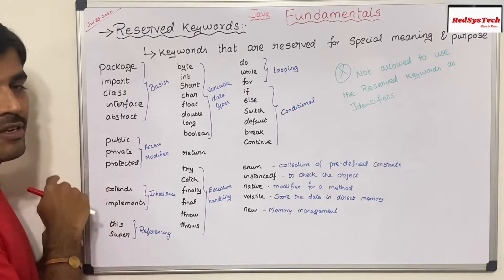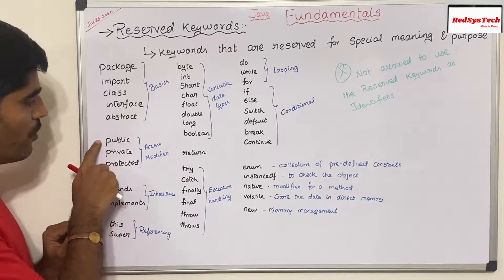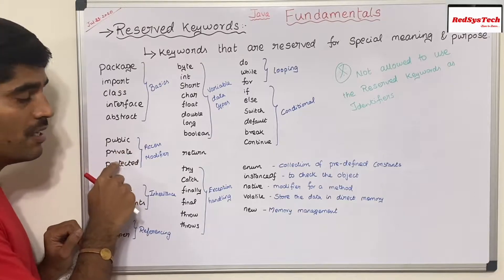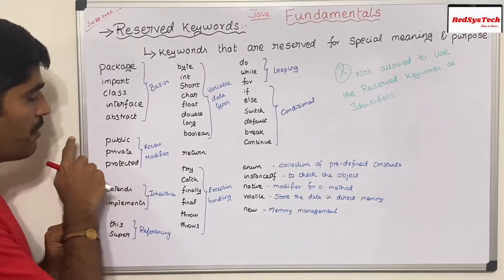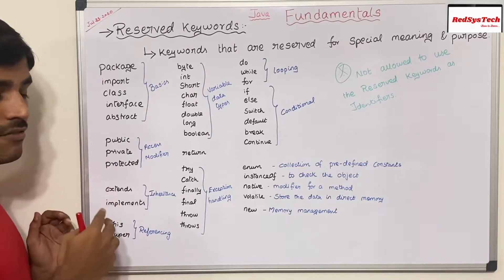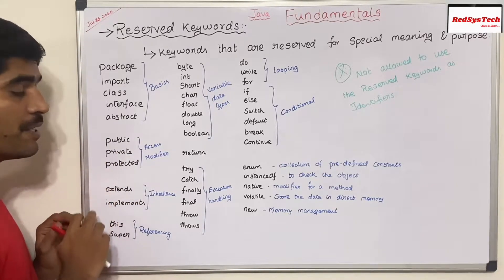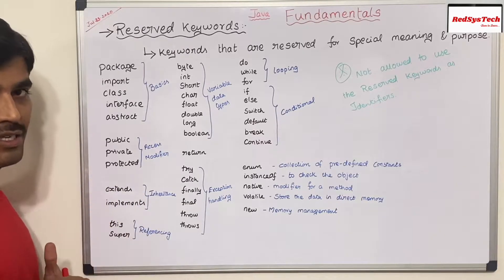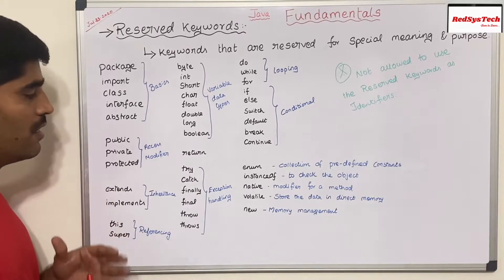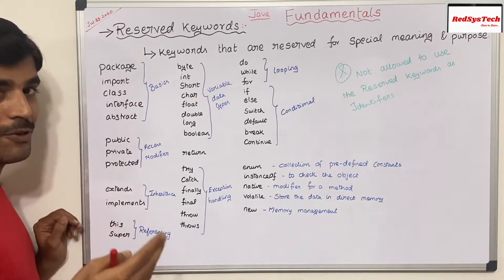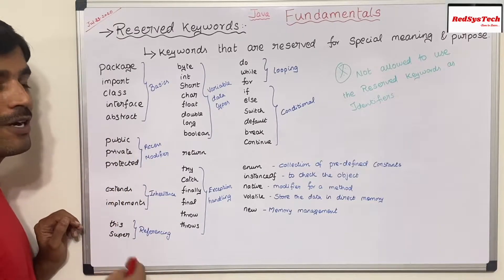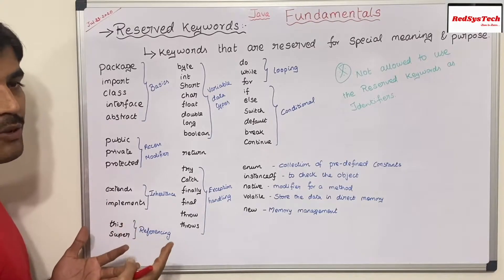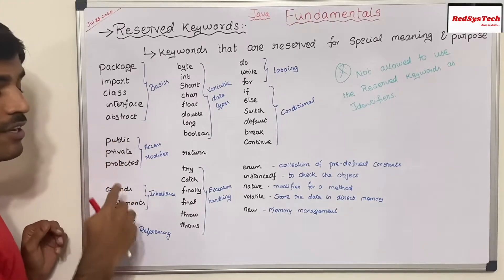Now let's go into the access modifiers. You have 'public', 'private', 'protected'. If I make it public, you can access it anywhere. Private means only that particular class can access it. Protected means only within that package. We have a detailed video explaining what is public, private, protected — how they differ and in which scenario to use each.